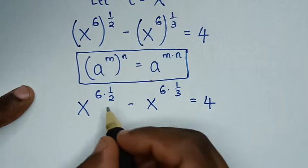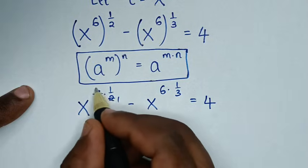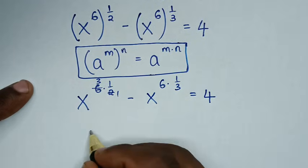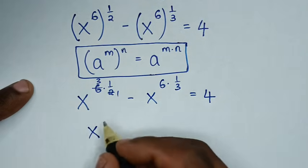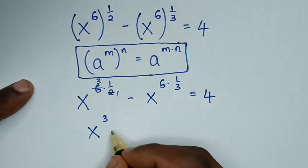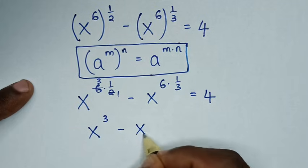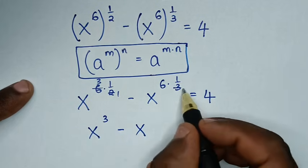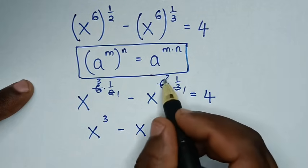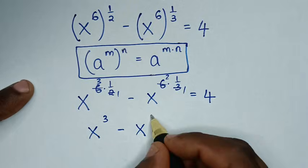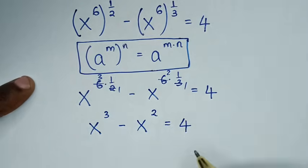We simplify: 6 times one half simplifies — here by 1 and by 3 — giving x to the power of 3. Then 6 times one third simplifies — here by 1 and by 2 — giving x to the power of 2. So we have x cubed minus x squared equals 4.